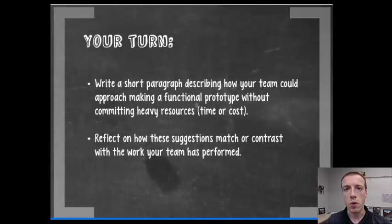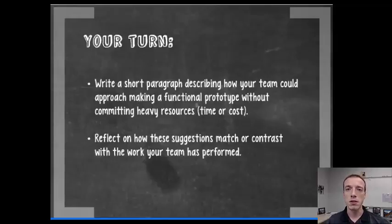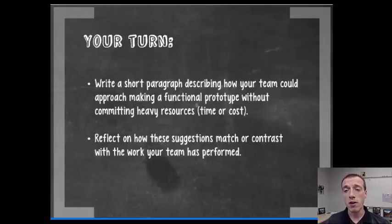Now it's your turn. Write a short paragraph describing how your team could approach making a functional prototype without committing heavy resources like a lot of time or cost. This is more than your low fidelity prototype — you're really trying to prove the concept or feasibility of what you're doing without spending all the time of building a final deliverable. Then reflect on how the suggestions in that paragraph match or contrast with the work your team has done so far, and think about how you could do a better job in the future.